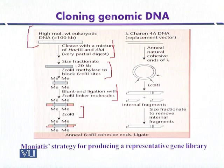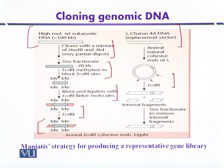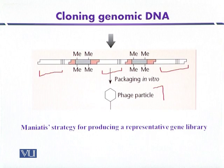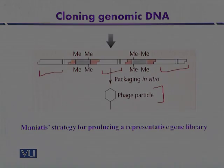The DNA is treated with EcoRI to produce sticky ends. A lambda replacement vector such as Charon 4A is used as the cloning vector — it is digested with EcoRI to produce sticky ends and the internal fragments are discarded. The cohesive ends of bacteriophage lambda are ligated with the source DNA. The construct is then used for in vitro packaging to produce phage particles, which are used to infect E. coli or other suitable host organisms.